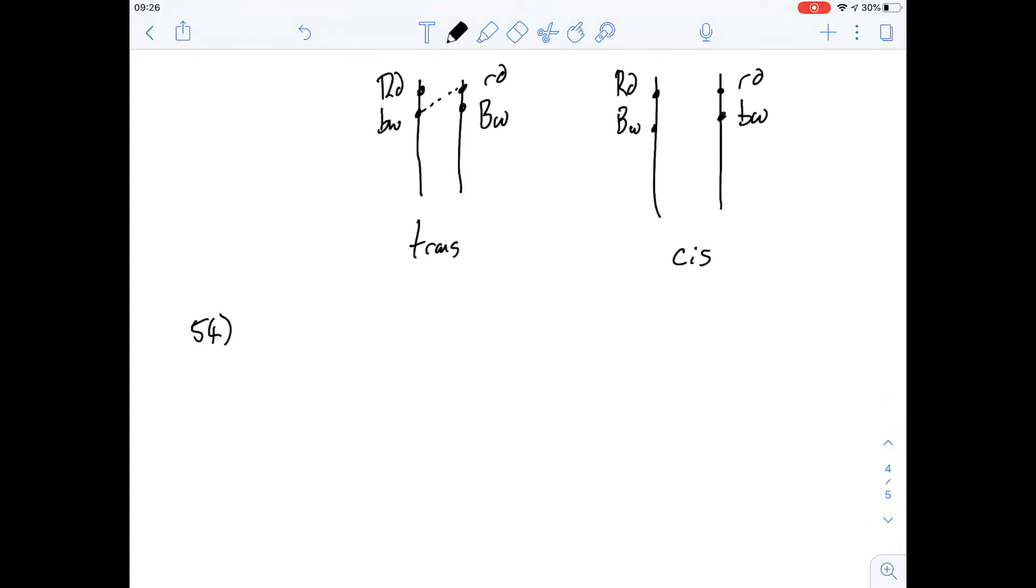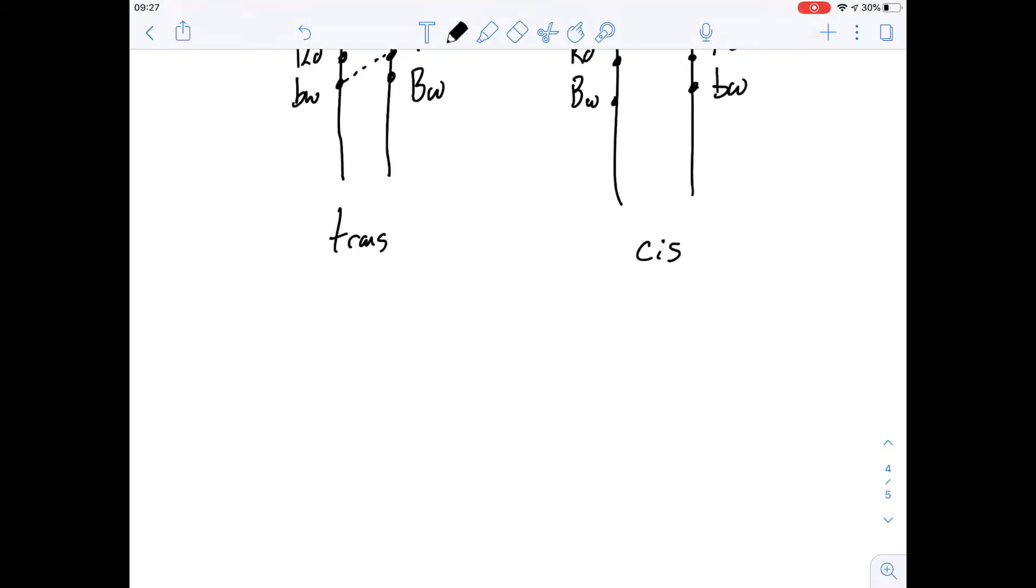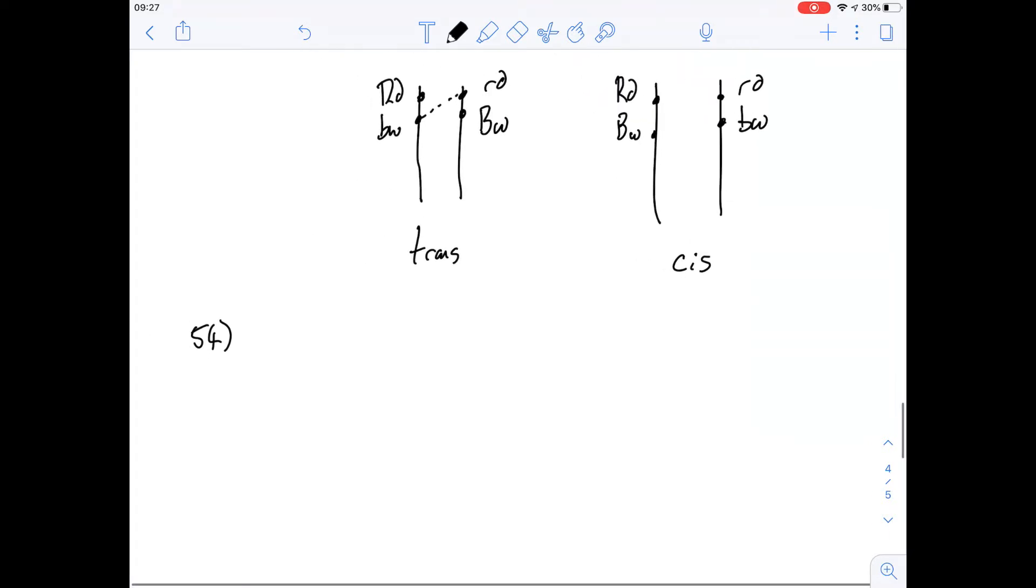So question 54 says dihomozygous red-eyed males are crossed with cis-dihybrid females. In females there's a 50% recombination between the brown and red loci. Okay so that first sentence introduces this cis-dihybrid idea. Let's go through and work out what the different genes that we passed on then are.